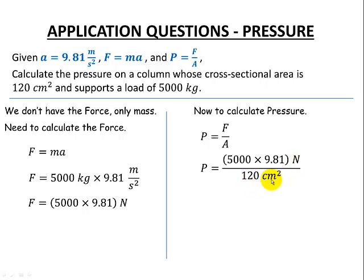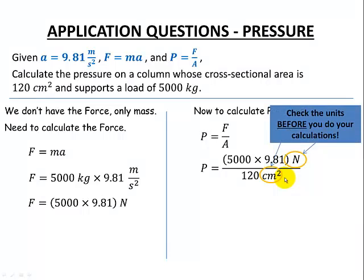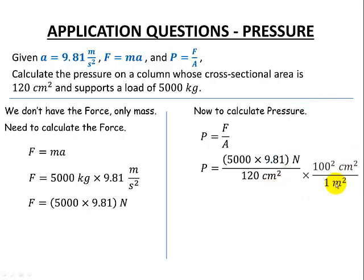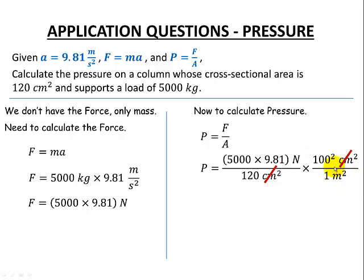Now for pressure — force over area — we put in 5,000 × 9.81 newtons, and our area is 120 centimeters squared. But we must stop and recognize that cm² must be converted to m². We know there are 100 centimeters in one meter; squaring gives us 100² cm² = 1 m². The centimeter squares cancel out, and we now have newtons per meter squared.